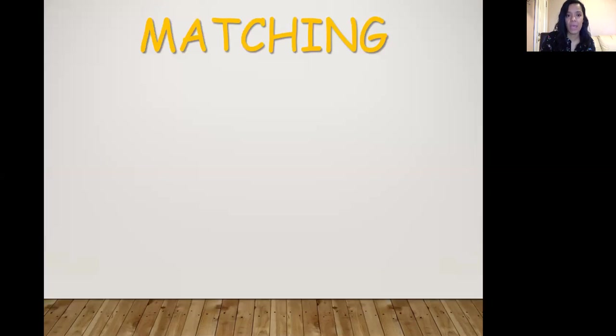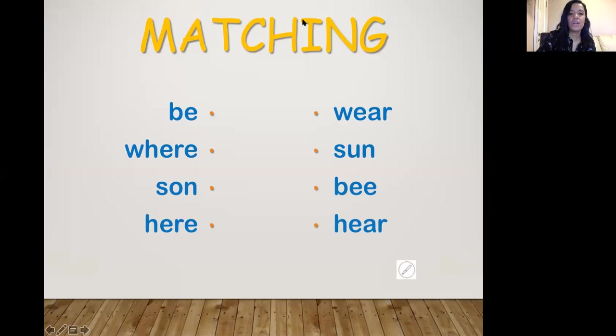Now let's match them. If we can match here, be, wear, sun, here. We did some of these yesterday. So let's see how we can do it now. The word be, we have wear, sun, bee, here. Be and bee. To be. And this one here is the animal, the insect. Buzz. And this one here is the bee.